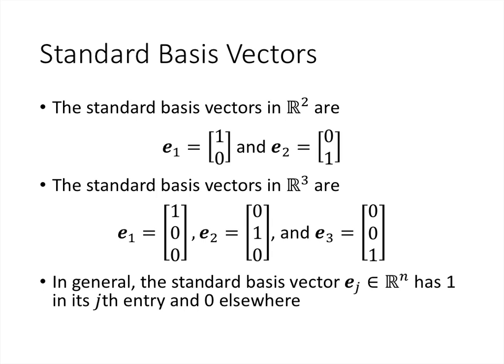The standard basis vectors in R3 are e1, e2, and e3: (1,0,0), (0,1,0), and (0,0,1). In general, the standard basis vector e_j has a 1 in the jth position and 0s everywhere else. Note that we use the same notation, so e1 is (1,0) in R2 and (1,0,0) in R3. The context matters — if you see e_2, you need to know which R^n it lives in to know exactly what that vector looks like.